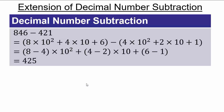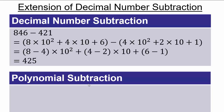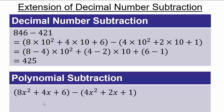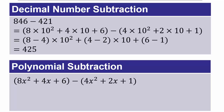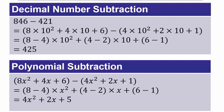Now let's look at polynomial subtraction. For 8x² + 4x + 6 minus (4x² + 2x + 1), just like in addition, we group similar units: 8x² minus 4x², which is (8−4)x²; then (4−2)x; then 6−1 singletons. This gives 4x² + 2x + 5. Notice the similarity — the only difference is that tens are replaced with x's.